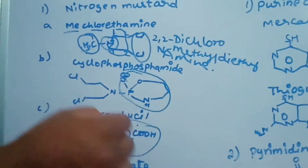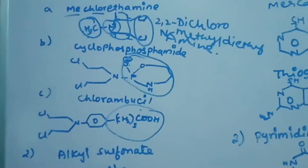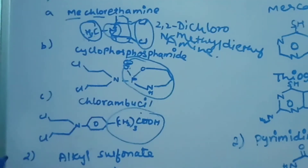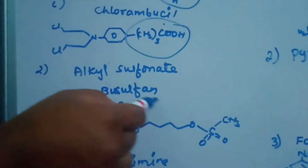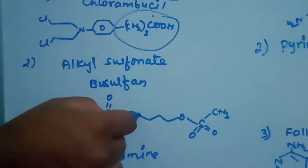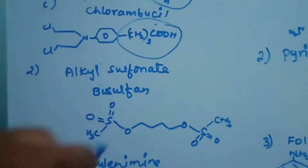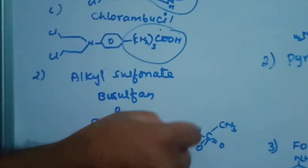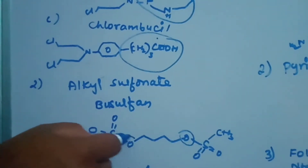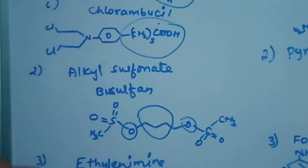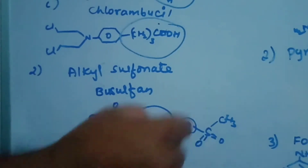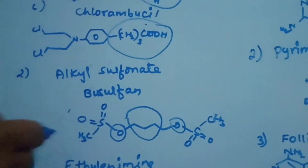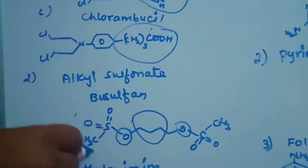The second sub-class of alkylating agents is alkylsulfonates. The example is busulfan. In busulfan, sulfonate groups are present on a butyl chain — positions 1, 2, 3, 4. 'Bus' refers to the butyl group, and 'sulfonate' means an ester-type sulfonate group.